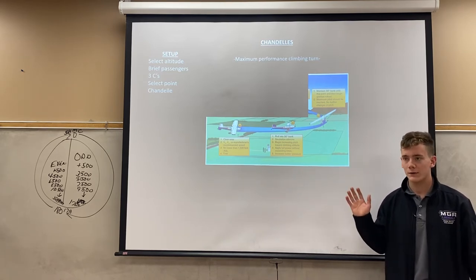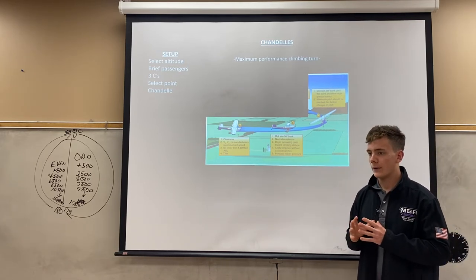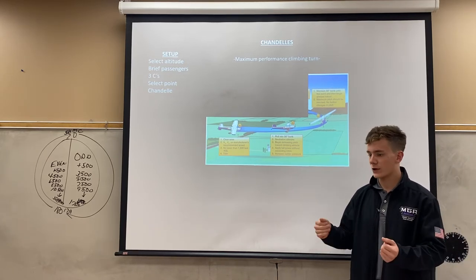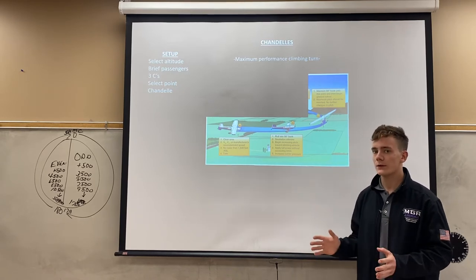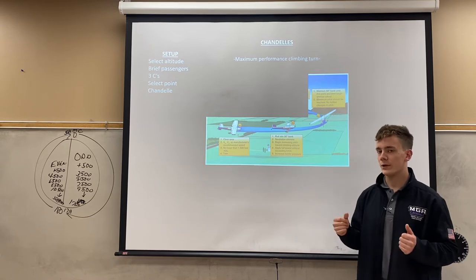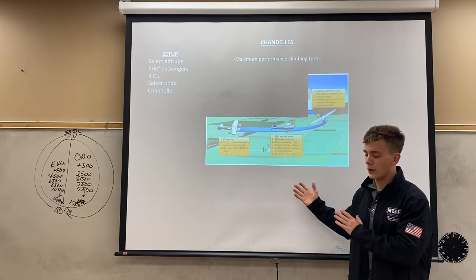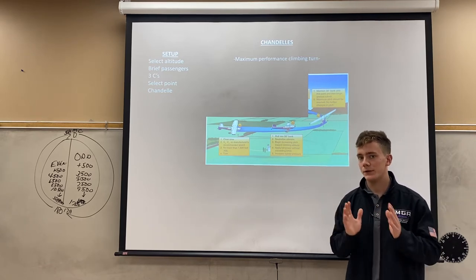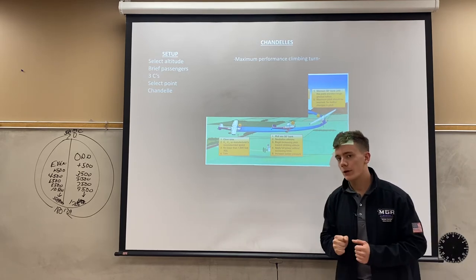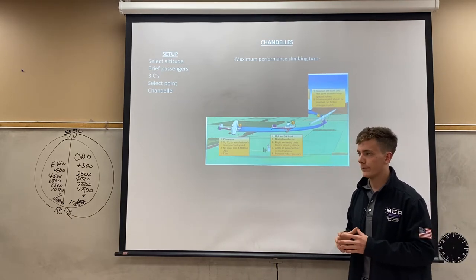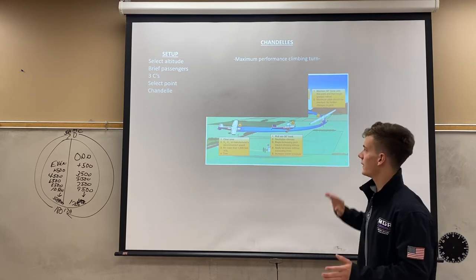That is the first 90-degree point of the turn. On your attitude indicator, holding about 17 degrees of pitch-up attitude at full power will bring your airspeed down to near stalling speed. As you get to this 90-degree point, your airspeed wants to be very low — preferably under 76 knots.